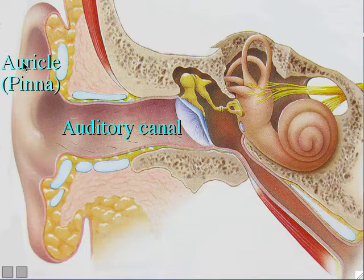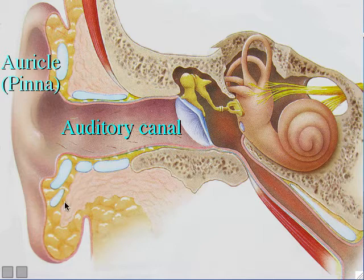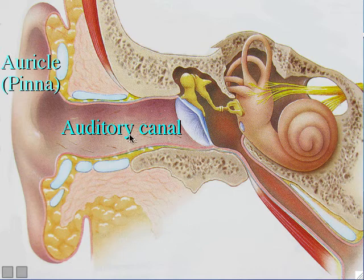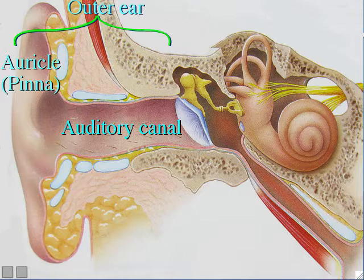The pinna — sometimes called the auricle — is basically some folds of skin with cartilage and other tissues inside of it. When you look at someone's pinna, you can see there's an ear hole, a hole that goes into it. The official name for that ear hole is the auditory canal. The pinna and the auditory canal together are called the person's outer ear.